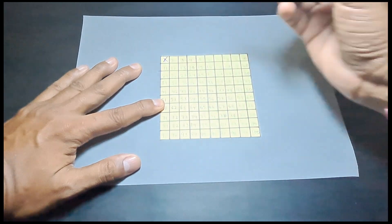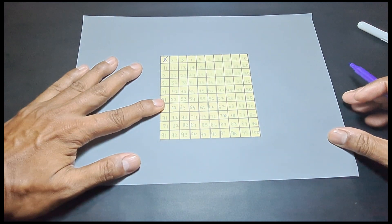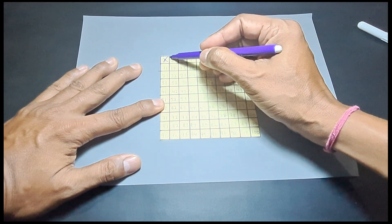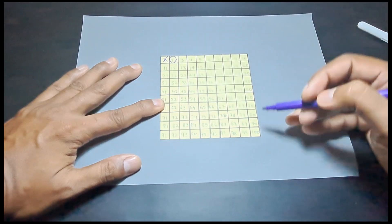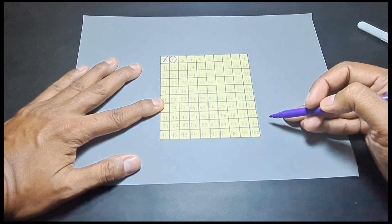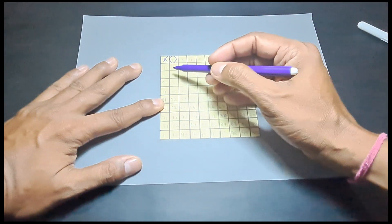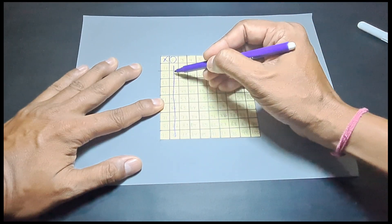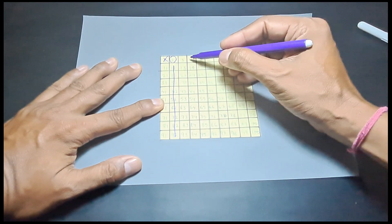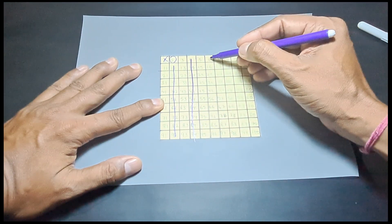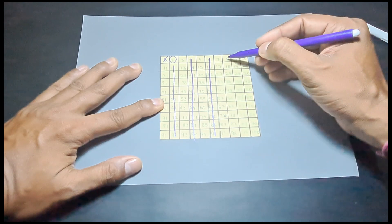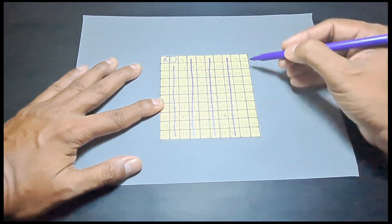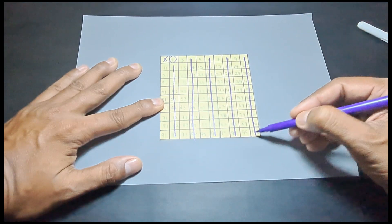We will cross 1 and next we will encircle 2 because 2 is a prime number and we will cross out all the multiples of 2 in this entire grid. The entire column and row containing all the multiples of 2 will be crossed out. You can see I am crossing out all the even numbers, so they are not prime numbers.